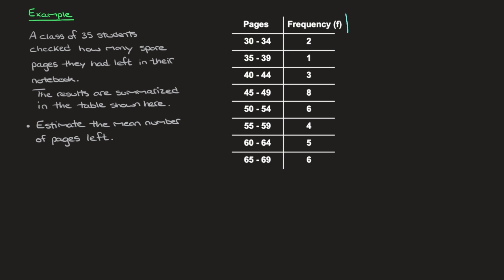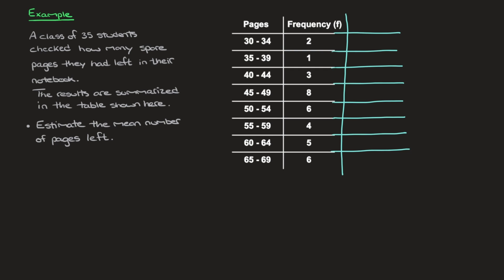I'll quickly add a new column to the table and add the corresponding rows. At the top of this column I'll write mid-values. In any formula we'll typically refer to these mid-values as x. What we want to enter into each of these cells is the mid-value of each of the groups — in other words, the mid-value of each of these class intervals.